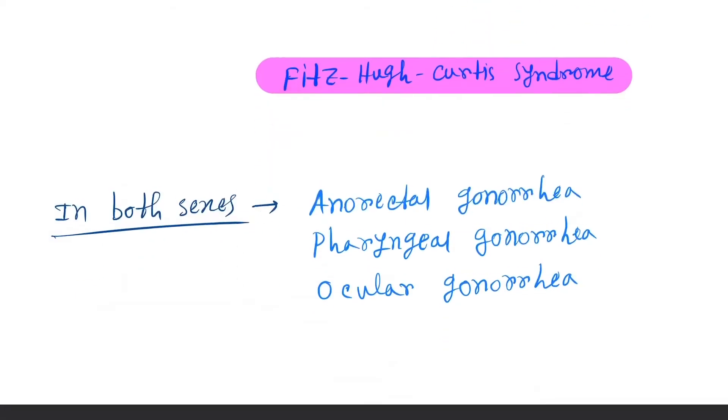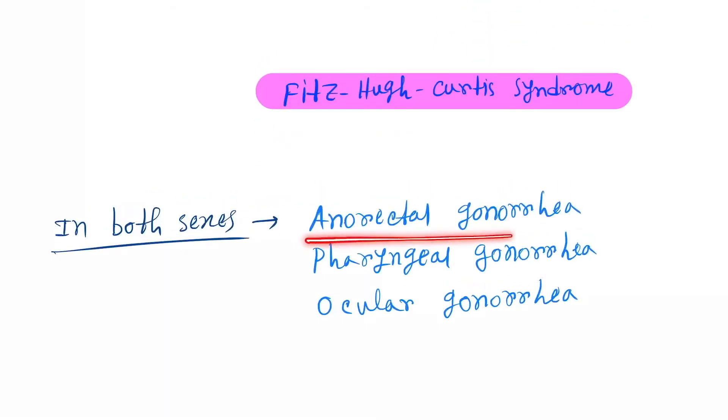Fitz-Hugh-Curtis syndrome. In both sexes, anorectal gonorrhea, pharyngeal gonorrhea, ocular gonorrhea. Anorectal gonorrhea can spread through anal sex and pharyngeal through oropharyngeal sex.